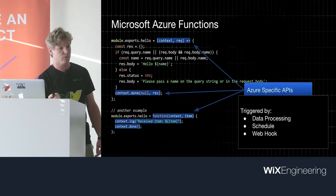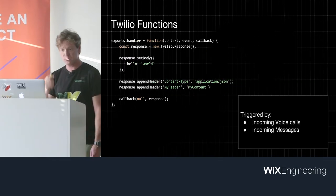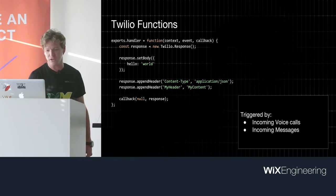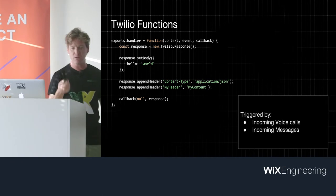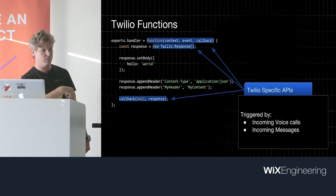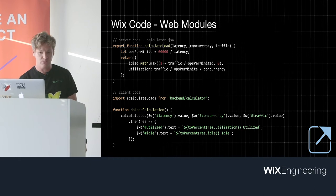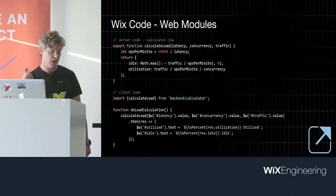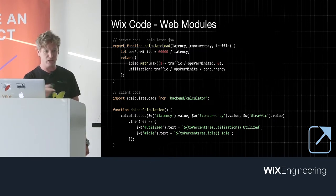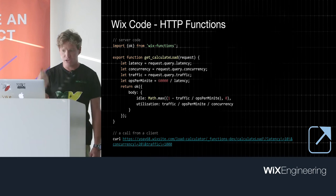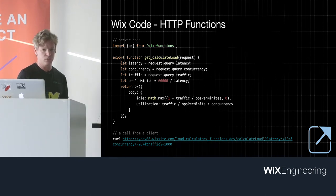We also have Twilio Functions — it's actually a very cool product because you can react to incoming voice calls and messages and create a function to do something about that, with their own specific API. And of course we have our own Wix code modules, which basically allows you to write serverless functions and consume them from client code as if you're just doing a regular async call. We wrap all the Ajax stuff underneath. You can create HTTP functions and call them from anywhere.